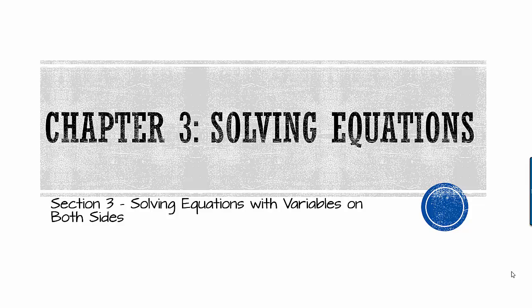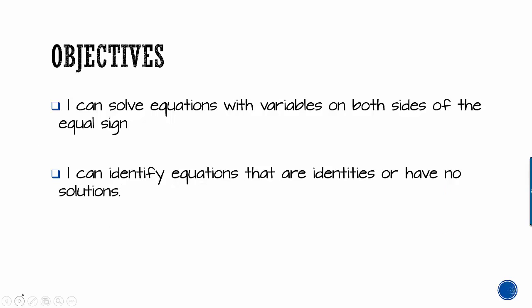Chapter 3, Section 3 is about solving equations when we have variables on both sides. By the end of this lesson, you should be able to solve equations with variables on both sides and identify equations that are identities or have no solutions.